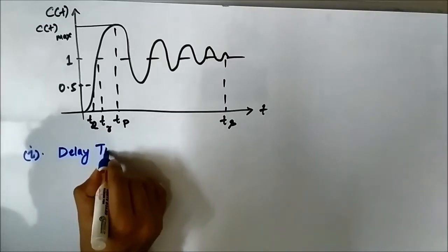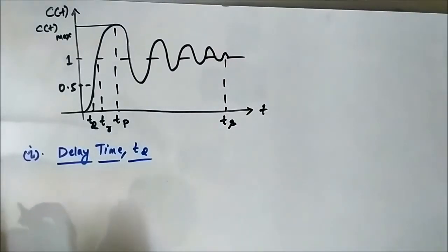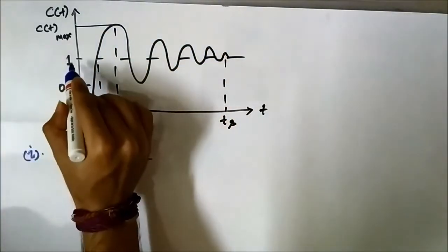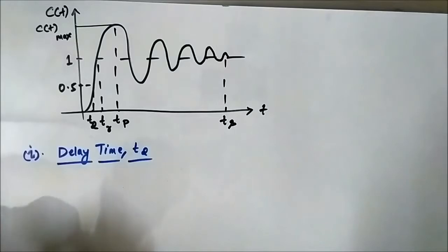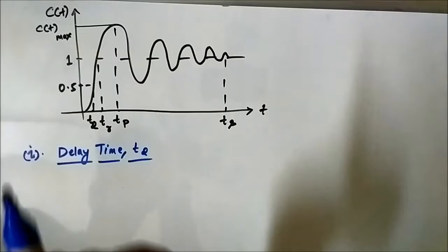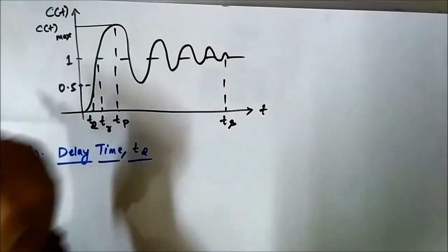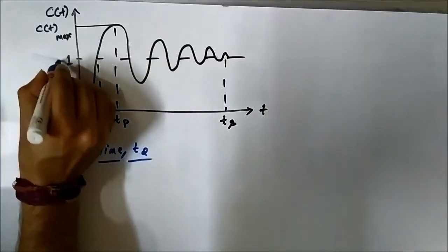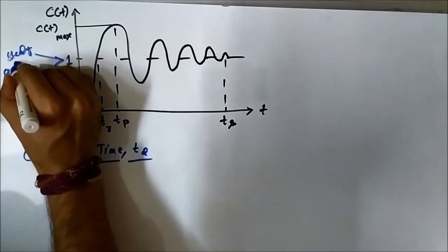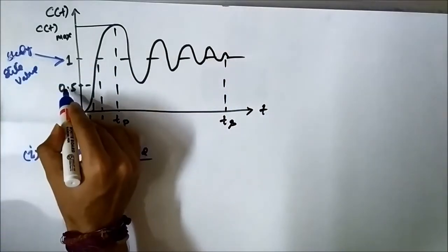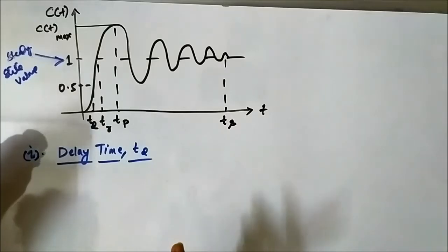What is the delay time? Looking at the output response, this is the steady state value and this is the peak value. Delay time is the time at which the output response reaches half of the steady state value — that is, 50% of the steady state value — for the first time.